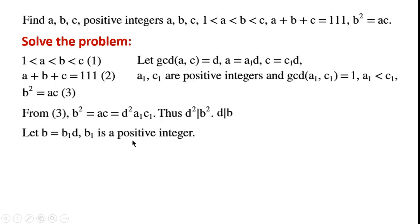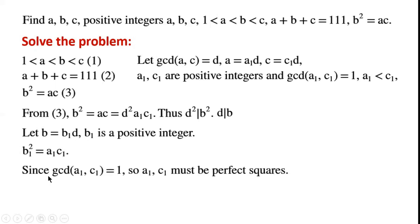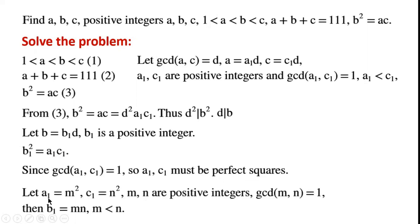Now we let B equal B1·D, where B1 is a positive integer. Then B1 squared equals A1·C1. Since the GCD of A1 and C1 equals 1, A1 and C1 must both be perfect squares. So let A1 equal M squared and C1 equal N squared, where M and N are positive integers with GCD(M, N) = 1. Then B1 equals M times N, and M is less than N.